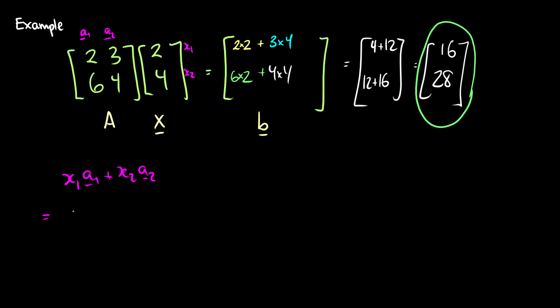This is going to be equal to 2 times [2, 6] plus 4 times the vector [3, 4], which gives you [4, 12] plus [12, 16], which equals [16, 28]. So these two methods are exactly the same.